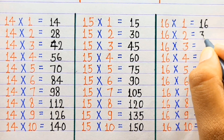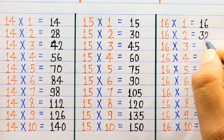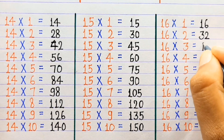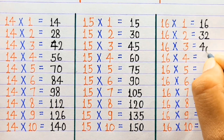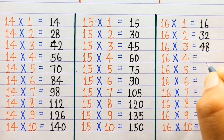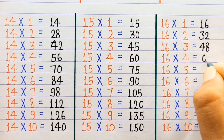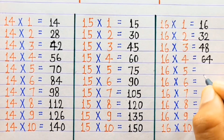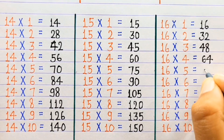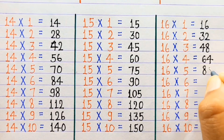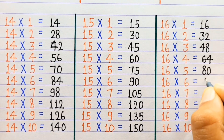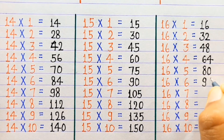16×1=16, 16×2=32, 16×3=48, 16×4=64, 16×5=80, 16×6=96.